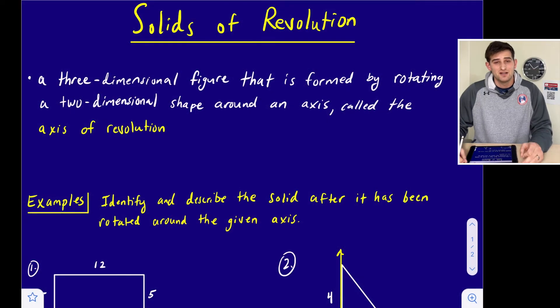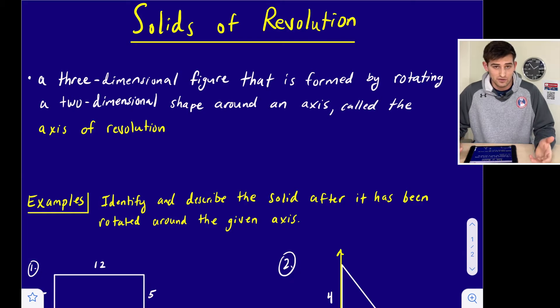Hello, everybody. In this video, we're going to talk about solids of revolution. What is a solid of revolution? It's simply just a three-dimensional figure that is formed by rotating a two-dimensional figure or two-dimensional shape around an axis, and we call that axis an axis of revolution.